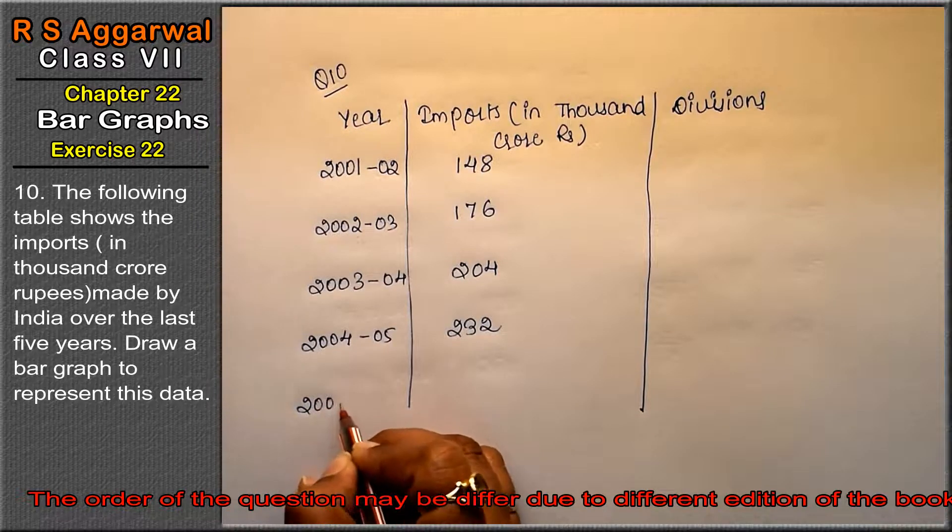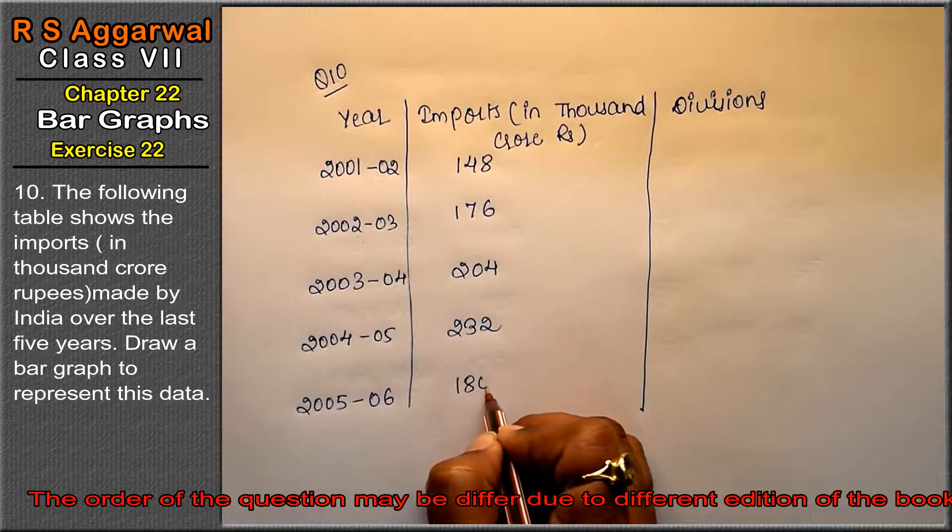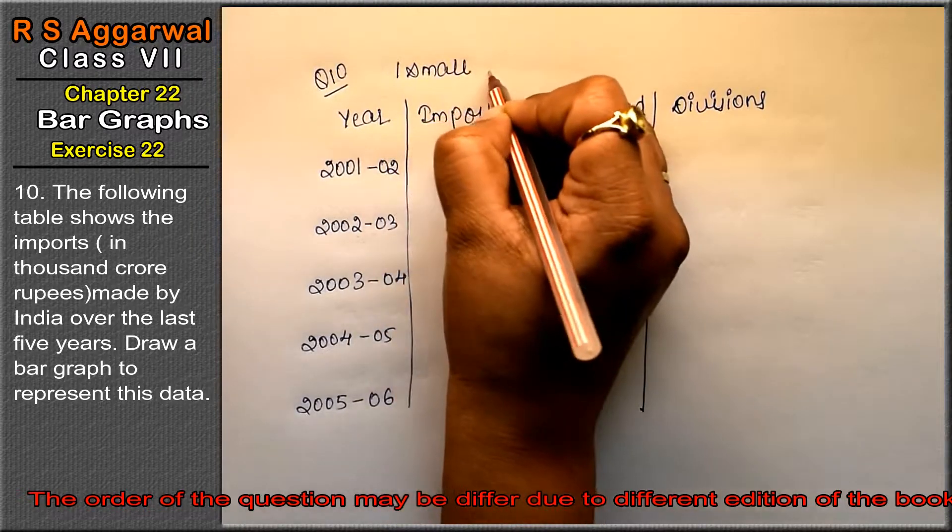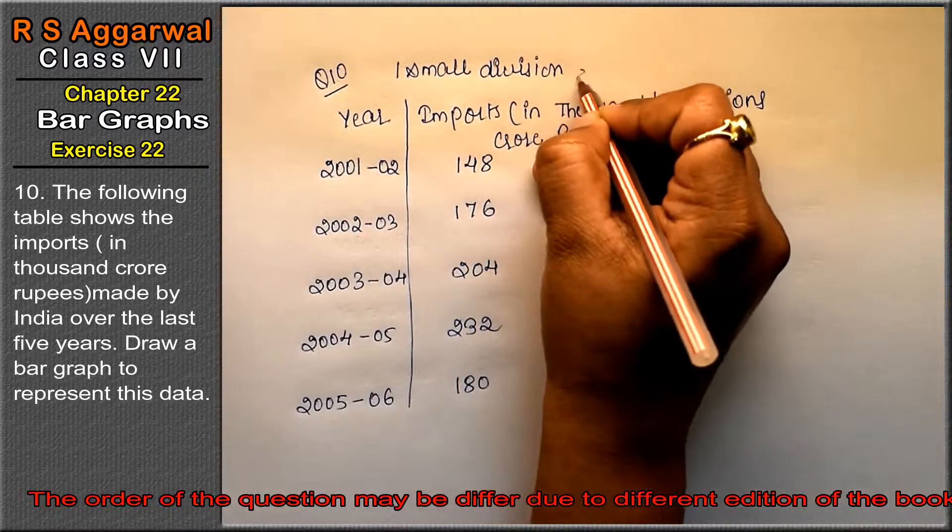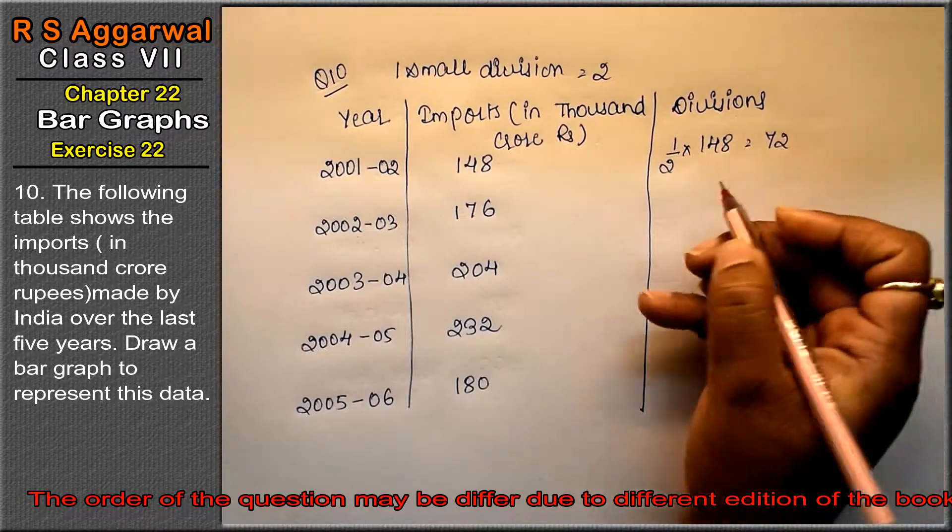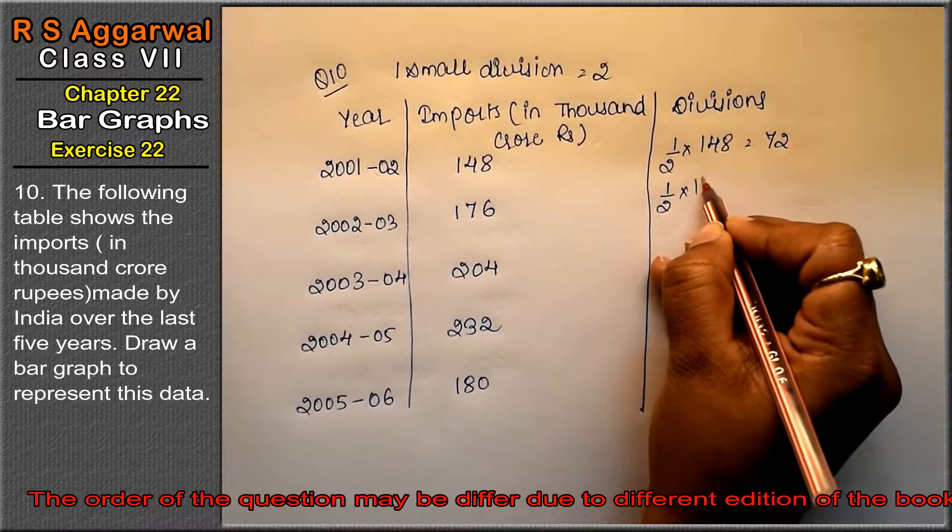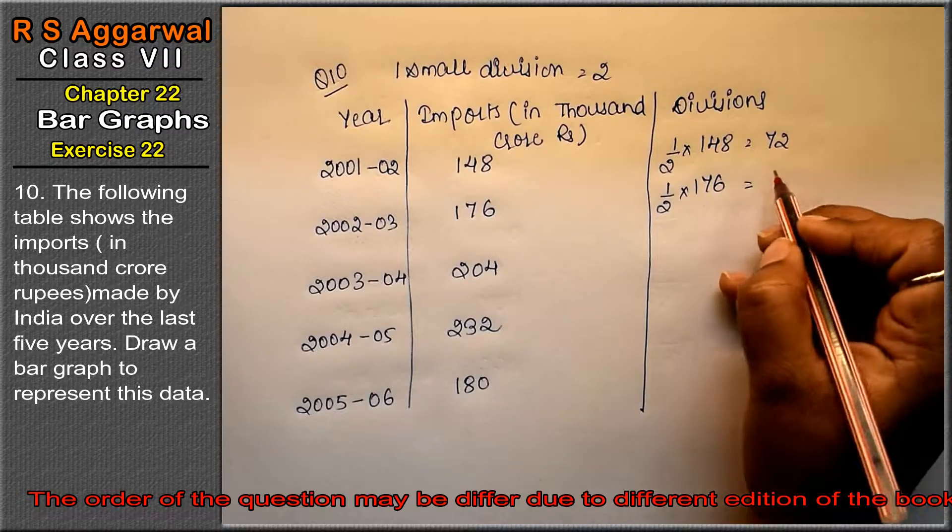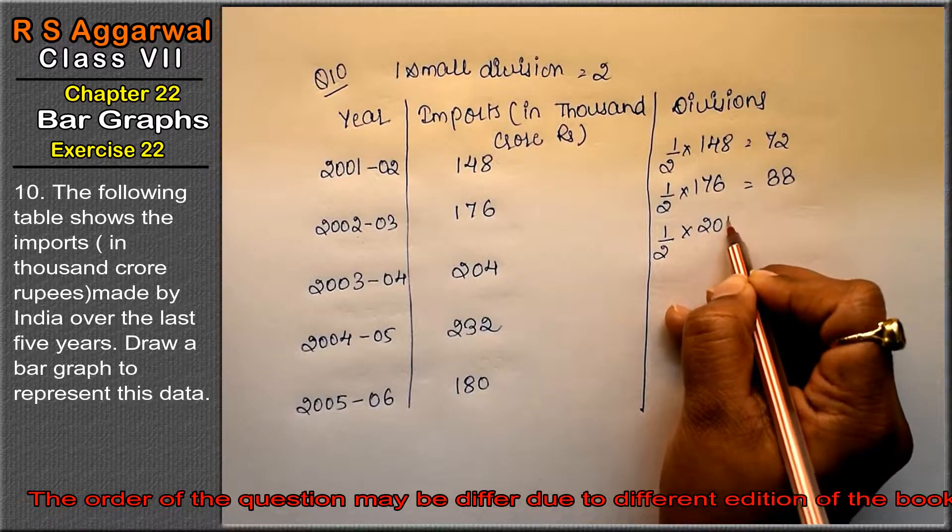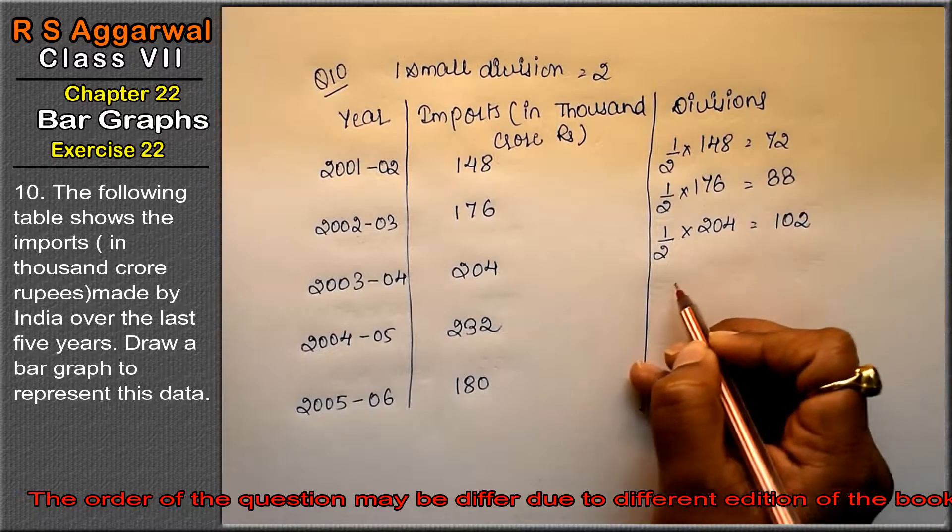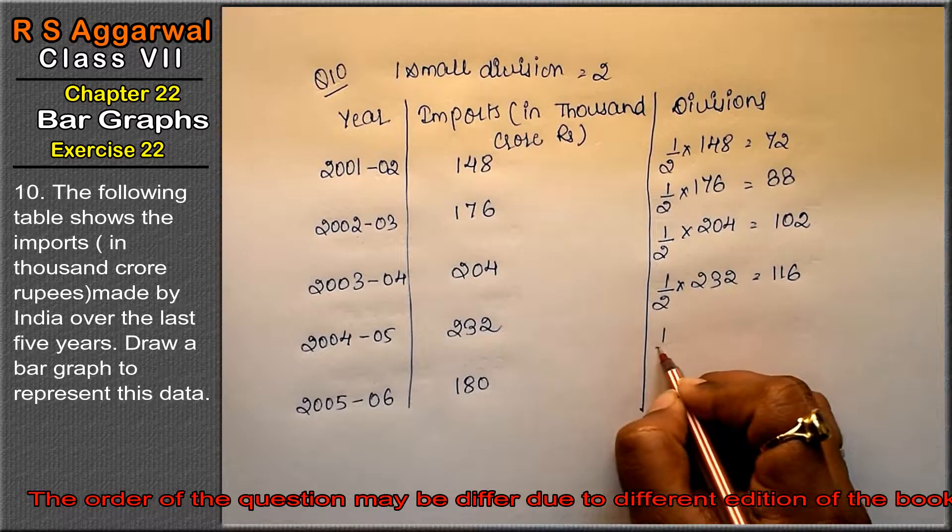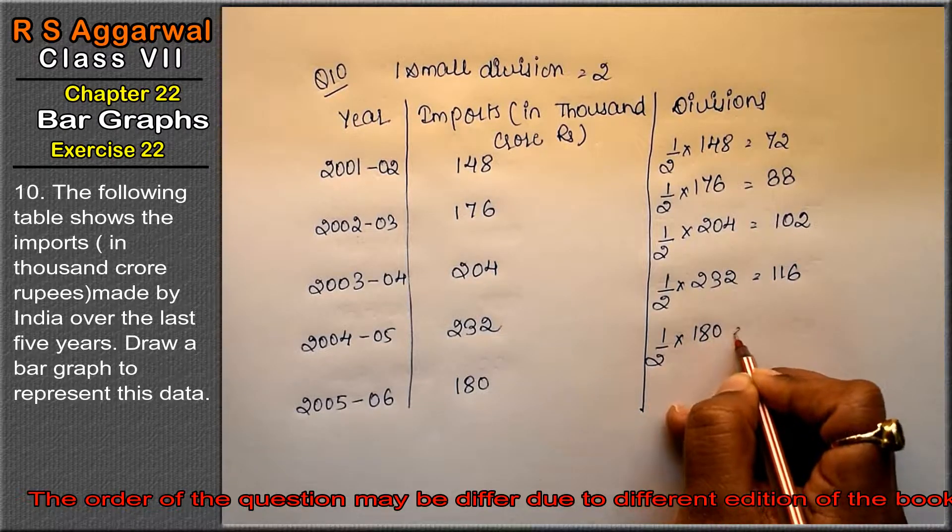One small division equals 2. For the calculations: 148 needs 74 blocks, 176 needs 88 blocks, 204 needs 102 blocks, 232 needs 116 blocks, and 180 needs 90 blocks.